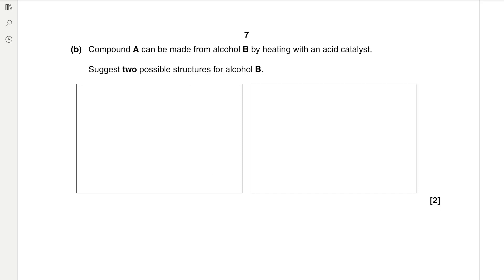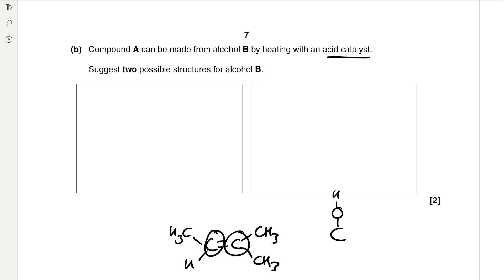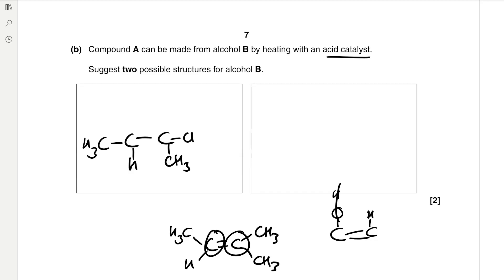Compound A can be made from alcohol B by heating with an acid catalyst. There are two possible structures for alcohol B. Remembering the structure of compound A, the alcohol group must be at one of two positions — attached to either carbon adjacent to the double bond. When dehydrating, the OH group is removed from one of those carbons to form the double bond, giving two possible saturated precursor alcohols with the OH at each respective position.